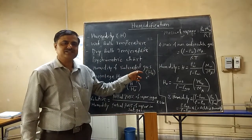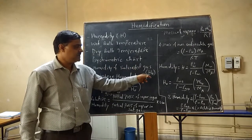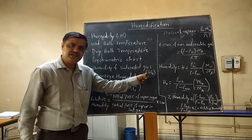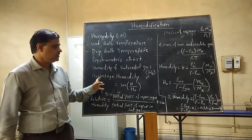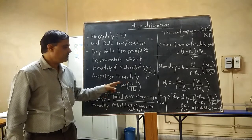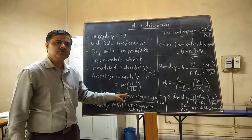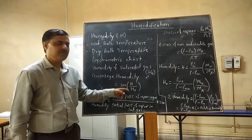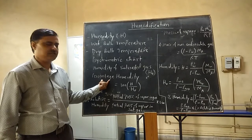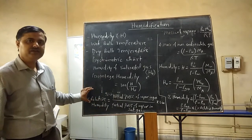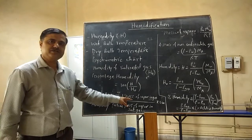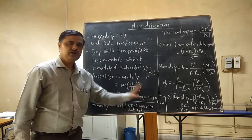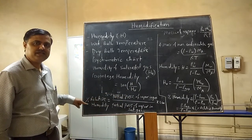The humidity of the saturated gas is denoted by H0. Percentage humidity is the ratio of H to H0, multiplied by 100. Percentage relative humidity is the ratio of partial pressure of vapor in the gas to the partial pressure of vapor in the saturated gas, multiplied by 100.